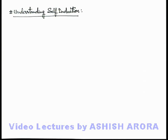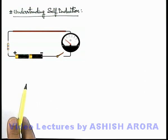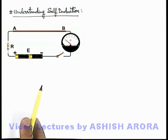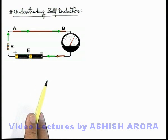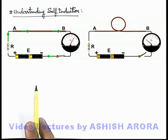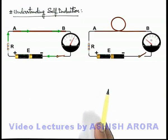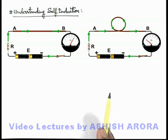Now in continuation, let's understand the concept of self-induction with the help of some realistic situations. Here you can see a circuit in which there is a straight wire A-B connected to a battery of EMF E and a resistance R, along with a galvanometer. When we close the switch, the current in the circuit instantly rises from zero to E/R, and the galvanometer deflection also changes instantly from zero to E/R. This is a normal circuit condition. But if we look at another circuit in which in wire A-B we have given a turn and a circular coil is made.